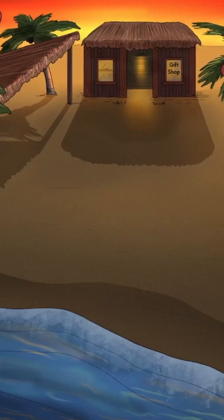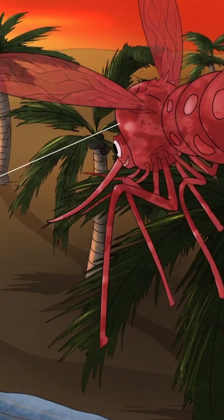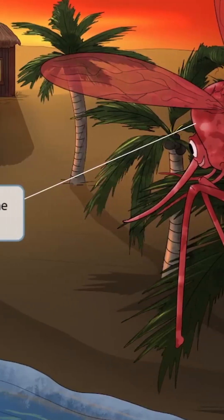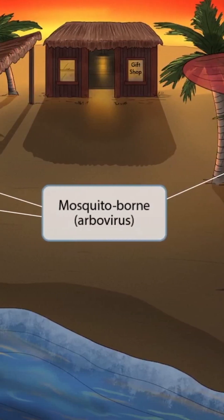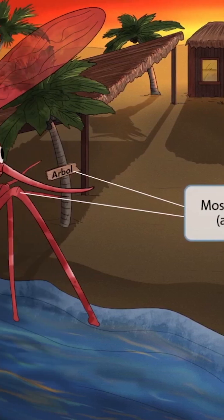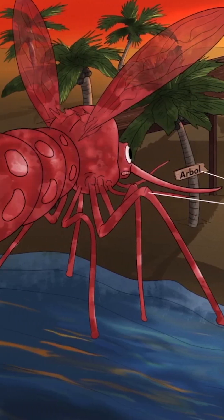Our story starts on the beach of a tropical island. We are going to see this island from the perspective of some blood-sucking mosquitoes. These mosquitoes are full of blood, as you can tell by their red bodies. But they're not satisfied — they want some more blood of the tourists here on this island.